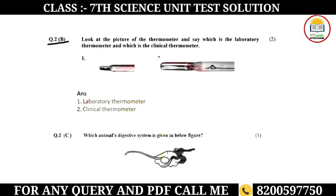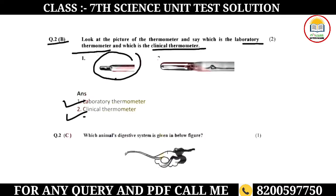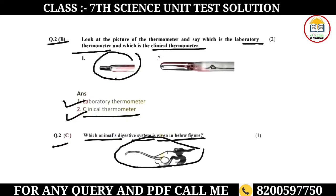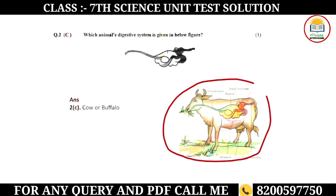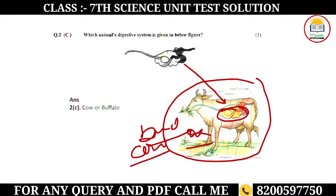Students, you know clinical thermometers. The next question asks: which animal digestive system is given below? Let me explain the figure. The animals shown are grass-eating animals — you can see parts of the animal's digestive system. You can see this in the cow and in the buffalo or ox. So your answer here is cow and buffalo.